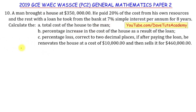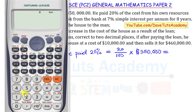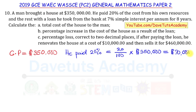In the question we can already note some things. There is an initial cost price given as $350,000 — that is the original price of the house. But the man paid 20%, which is 20/100 of $350,000. Using a calculator: 20 ÷ 100 × $350,000 gives us $70,000.